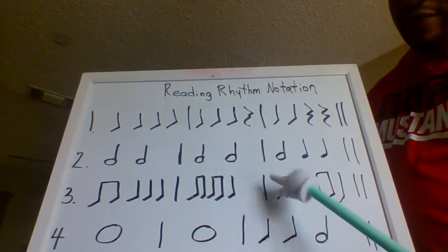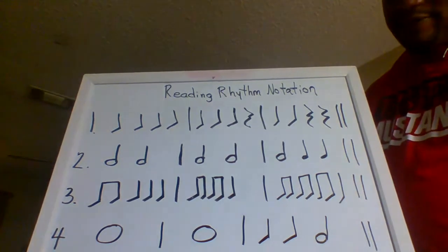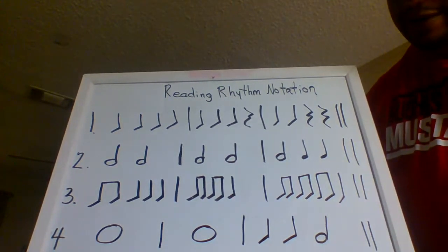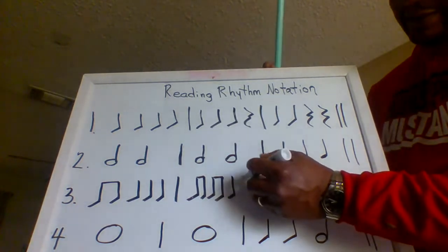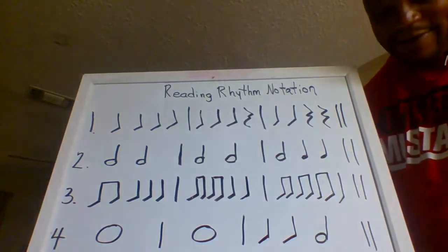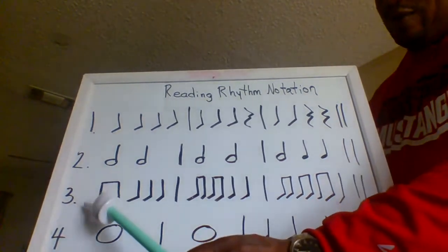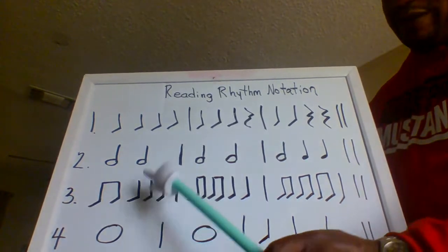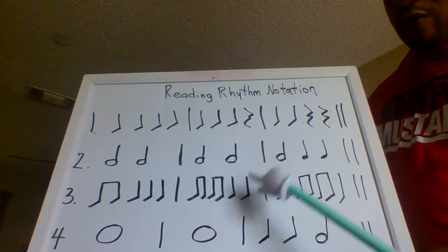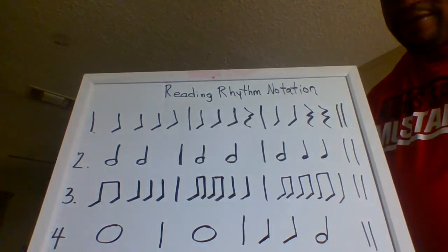I missed one beat here — I need to put it in the exercise; I think it was erased somehow. All right, now let's go back and do line three again. Ready — and: one-and, two, three, four, one-and, two-and, three, four, one-and, two-and, three-and, four.